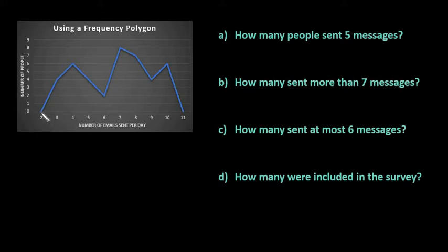A frequency polygon always starts at the class below the first value and ends at the class above because there are zero that fall under that category.